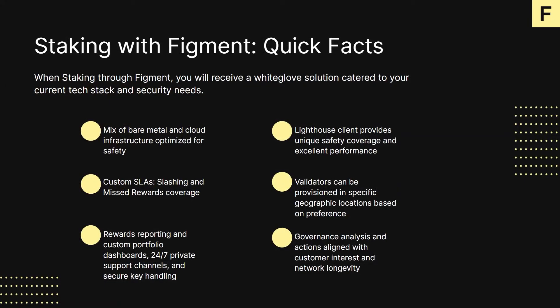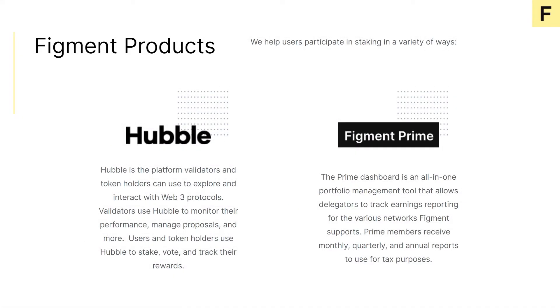To help deliver that vision, we offer staking, middleware, and application layer solutions for token holders and developers investing in and building on Web3 technologies. We're on a journey to build a better internet, keeping privacy, data ownership, transparency, and censorship resistance top of mind. At Figment, we offer a couple of different services to help users participate in staking. Hubble from Figment is a next-generation Web3 explorer, allowing token holders the ability to stake tokens, manage governance proposals, monitor validator performance, and more. Hubble is a powerful tool in the Web3 world.